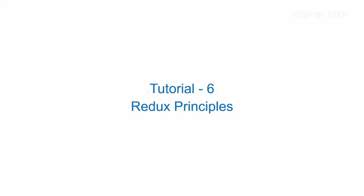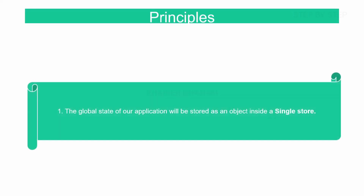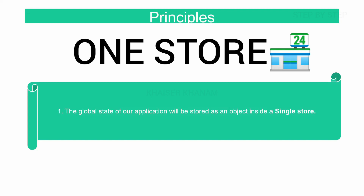These principles are the most important principles in Redux, which are being followed in Redux every time. Principle 1: the global state of our application will be stored as an object inside the single store. In Redux, as we all know, there will be only one store in our entire application.